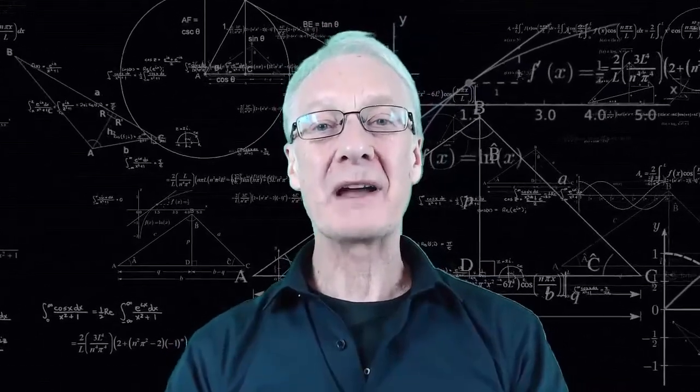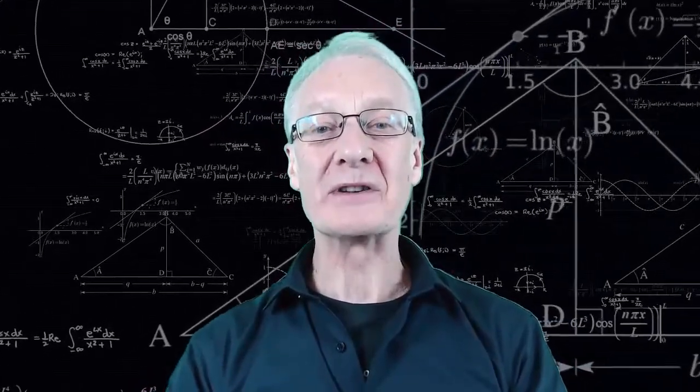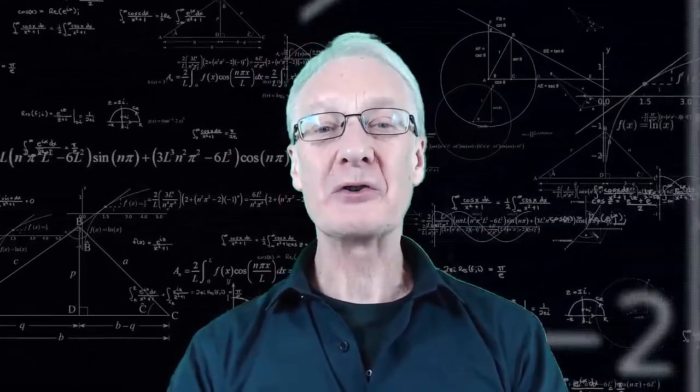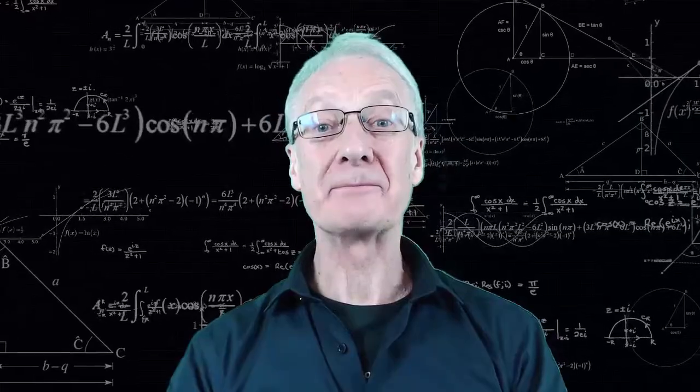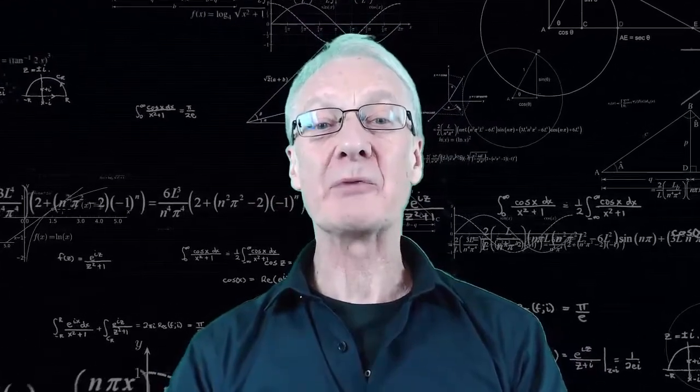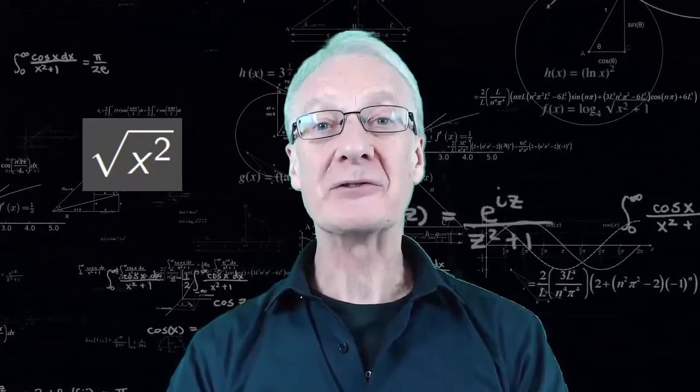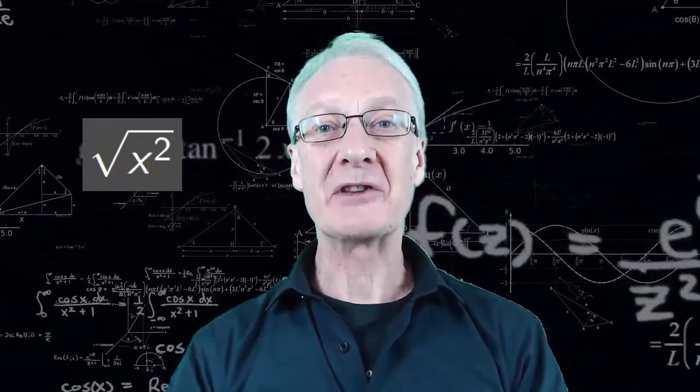There are questions in mathematics to which the answer seems obvious. But sometimes a closer look shows that we've missed something. An example of this is when we take the square root of a square. What's the result?